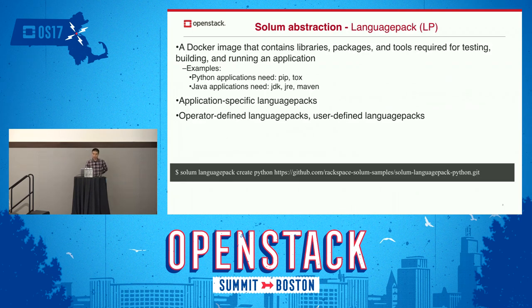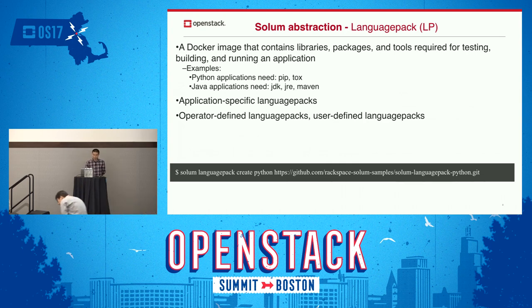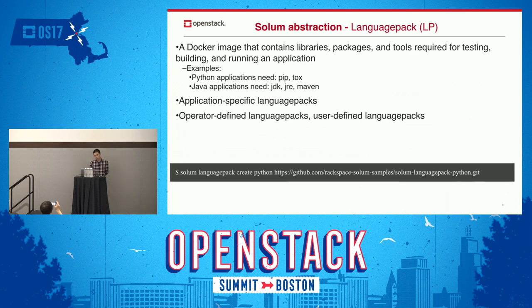A language package is a Docker image that contains the libraries, packages, and tools required for testing, building, and running applications. For example, a Python application needs pip and tox; a Java application needs JDK, JRE, and Maven. These are application-specific language packages. Language packages can be defined by the operator or by the user. You can use a simple command to create a language package — for example, 'solom language-package-create' with the package name and a GitHub URL.